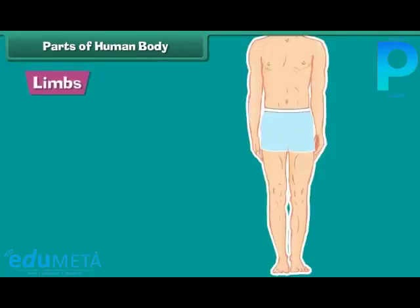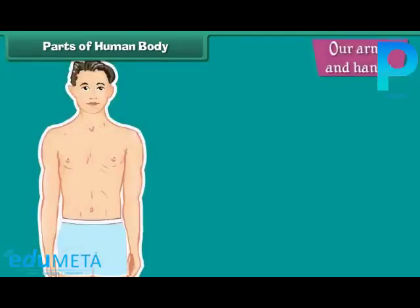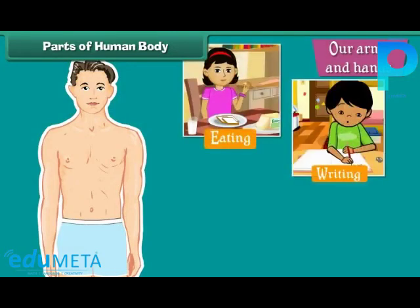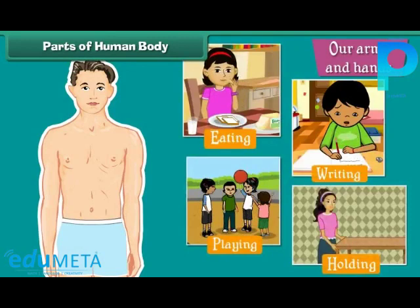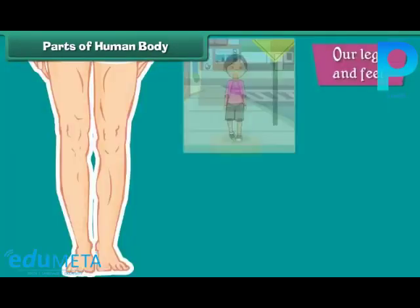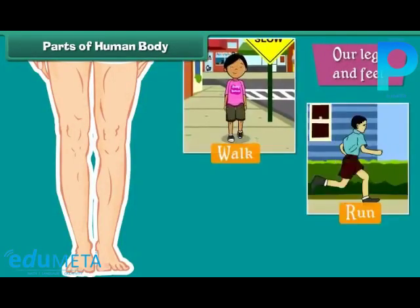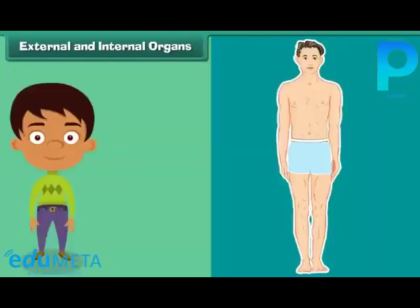Limbs consist of a pair of arms, hands, legs, and feet. Our arms and hands assist us in eating, writing, playing, holding, and lifting things. Our legs and feet help us to walk, run, kick, and dance.